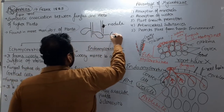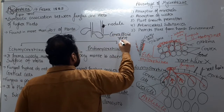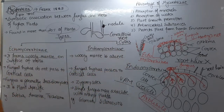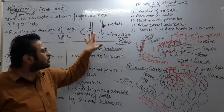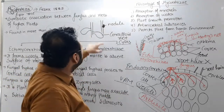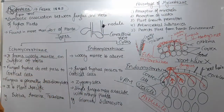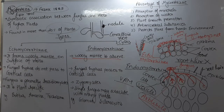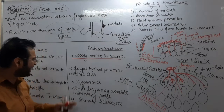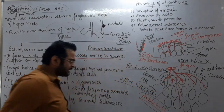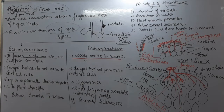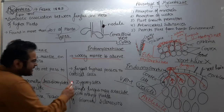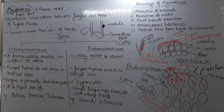Yeh woolly mass nodule ki form mein bhi mil sakta hai, which is known as coralloid root, and it is found in cycas. Endomycorrhiza woolly mass upar nahi banata. Endomycorrhiza ke case mein fungal cells cortex se aage nahi jaate. Ectomycorrhiza jo hai yeh mainly basidiomycetes type ki fungus banayegi, aur endomycorrhiza zygomycetes type ki fungus banayegi.